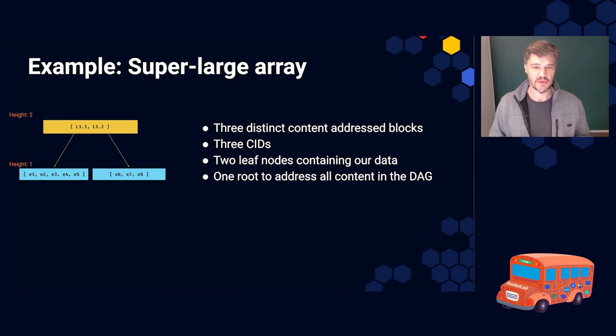So we've got three different blocks, three distinct CIDs, two of them are leaf nodes containing the data we care about. And there's one root at the top there. So with the CID of the root, we'll get us to all of the elements in the array. We'll look at how in a minute, but let's say we want to keep on growing. What do we do?